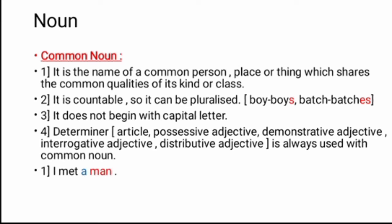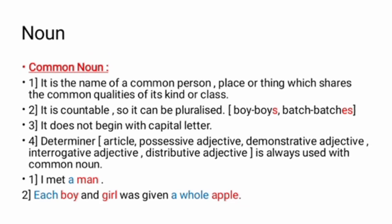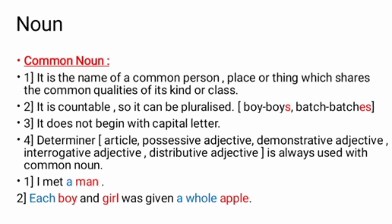I met a man. Here, man is the common noun. And article a is the determiner which determines the common singular noun man. Each boy and girl was given a whole apple. Each is the distributive adjective, it is a determiner. Here, apple is also the common noun. And the adjective a whole precedes it.